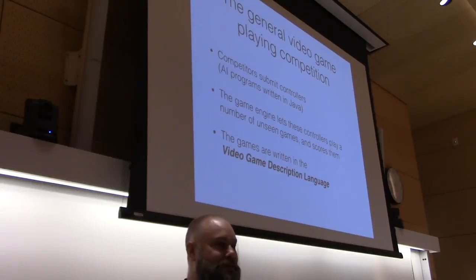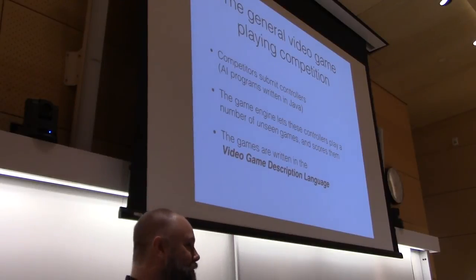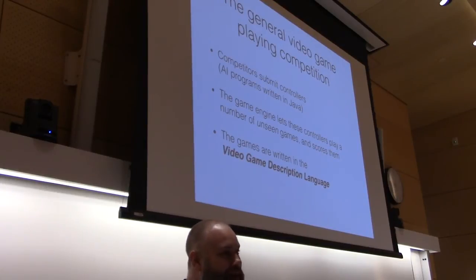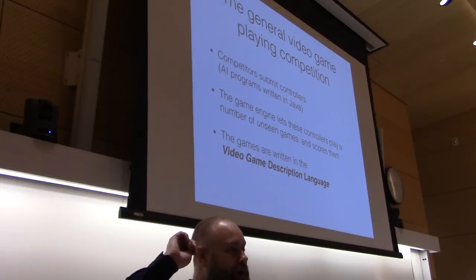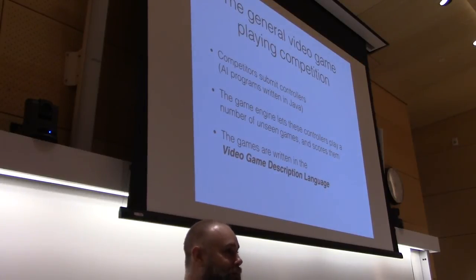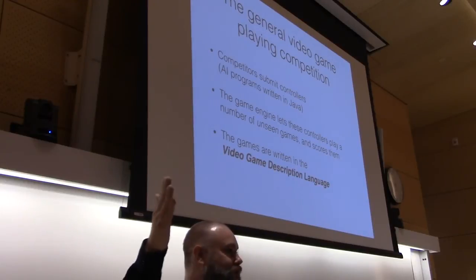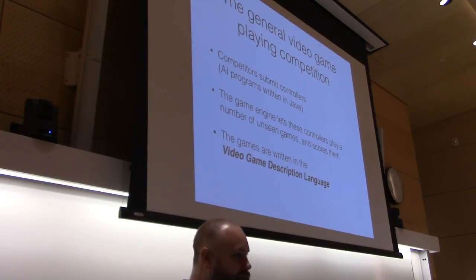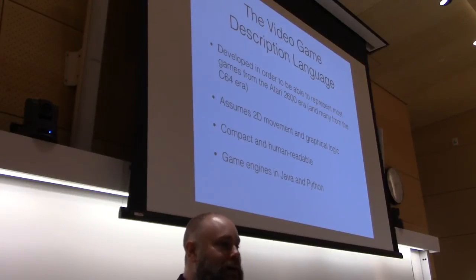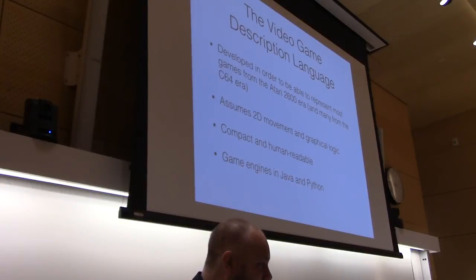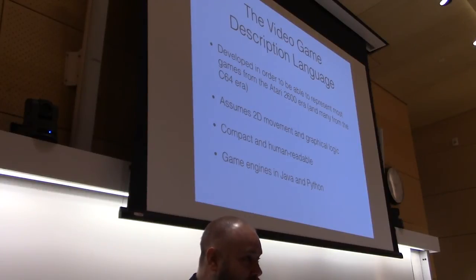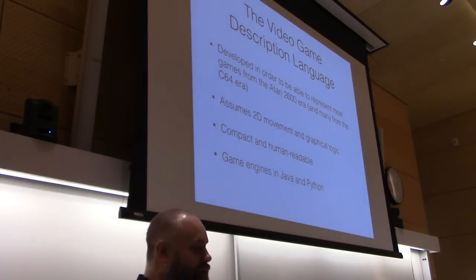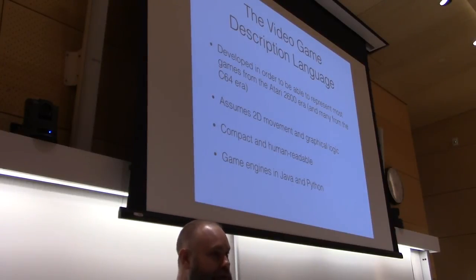You submit controllers and they play a number of unseen games — games that neither you nor the controllers have ever seen before. Scores are based on winning as many games as possible and getting as high a score as possible. We developed a language for this called the Video Game Description Language, which in theory can represent most games relying on two-dimensional movements where effects are based on collision between different sprites. It's supposed to be compact and human-readable so you can easily develop new games.